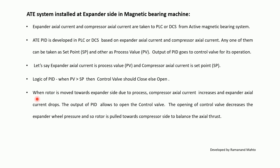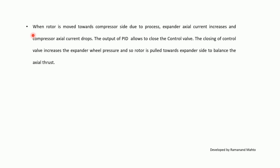When the rotor moves towards the expander side due to process conditions, compressor axial current increases and expander axial current drops. The output of the PID allows the control valve to open. Opening the control valve decreases the expander wheel pressure, so the rotor is pulled towards the compressor side to balance the axial thrust. When the rotor moves towards the compressor side, expander axial current increases and compressor axial current drops. The PID output closes the control valve, increasing expander wheel pressure, and the rotor is pulled towards the expander side to balance the axial thrust.